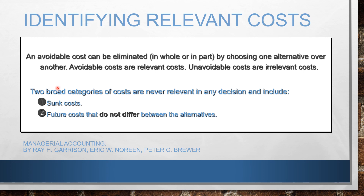Now let's proceed to identifying relevant costs. All avoidable costs are relevant costs. Those that we cannot avoid are irrelevant costs. If a cost can be eliminated — totally or just partly — by choosing one alternative over another, then that is a relevant cost.